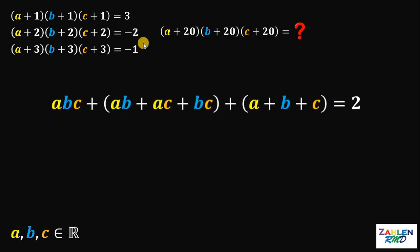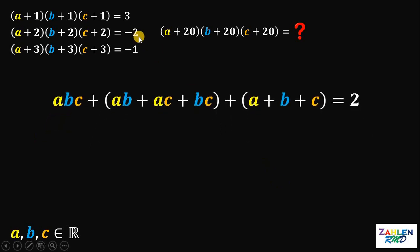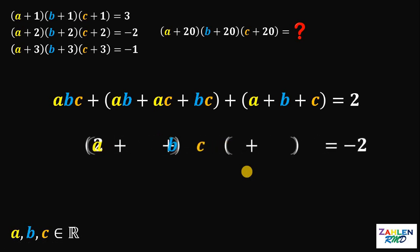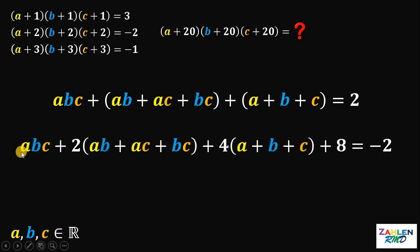Setting aside the first result, let's take the second equation. Multiplying out the left-hand side, we can see a pattern: we get abc + 2(ab + ac + bc) + 4(a + b + c) + 8. Notice the coefficients 2, 2 squared (which is 4), and 2 cubed (which is 8). Subtracting 8 from both sides gives us negative 10 on the right-hand side.